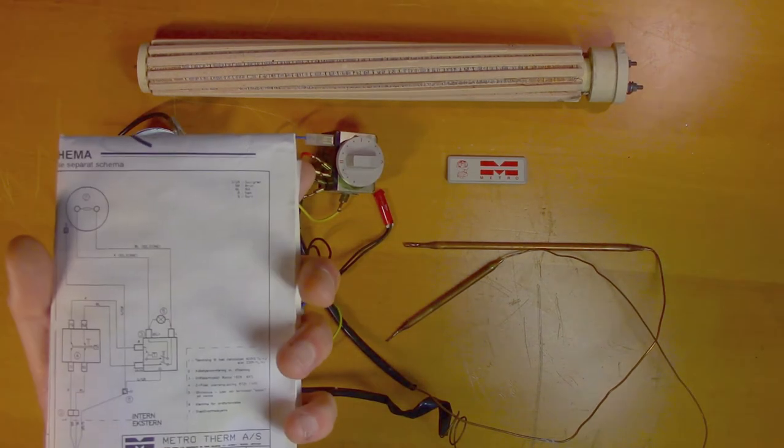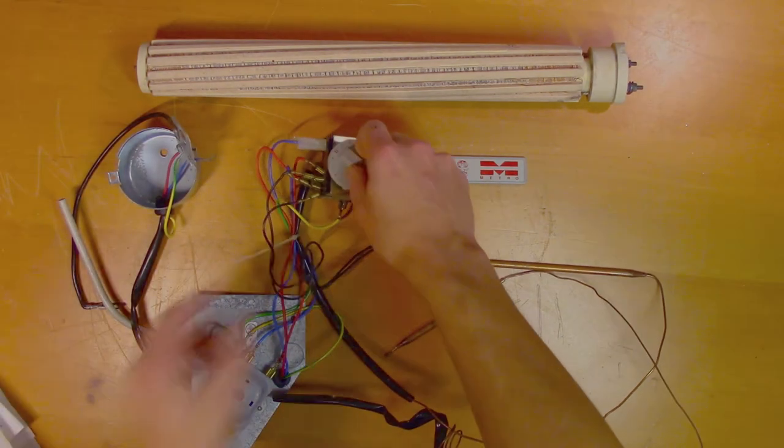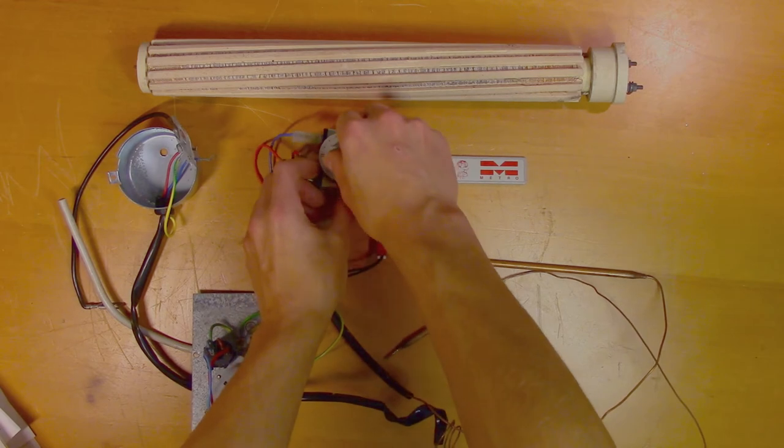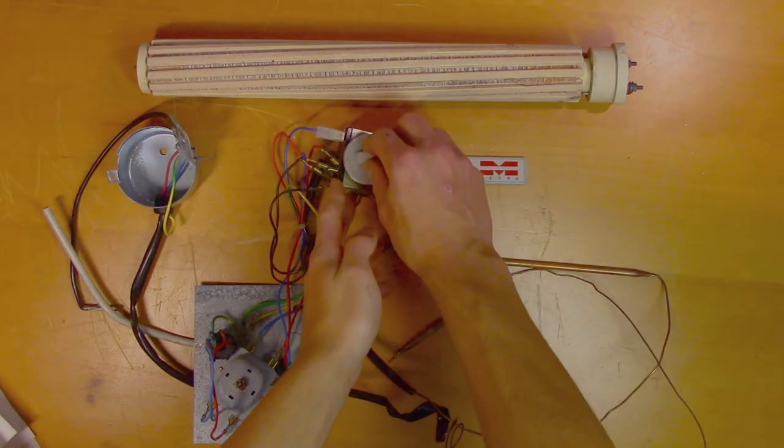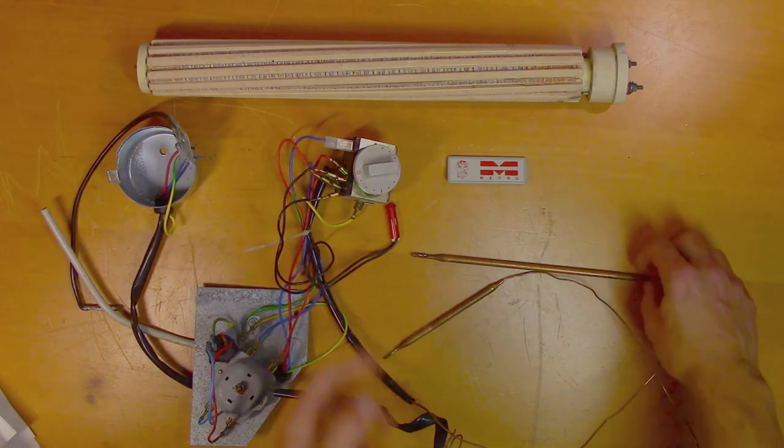And then we continue to the thermostat relay. And that's this thing right here. So here you decide how hot you want your water. And this determines at which water temperature the relay will trip. And it measures the water temperature with this long copper rod.